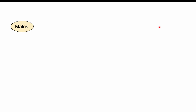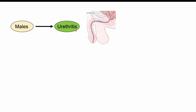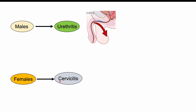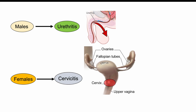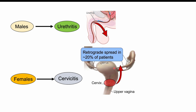In males, infection leads to urethritis — an inflammation of the urethra — and in some cases the organisms can invade into the epididymis and testis. In females, the organisms can enter the cervix and cause cervicitis, specifically endocervicitis on the inner side of the cervix. In some cases they can spread further up into the female reproductive system — this retrograde spread occurs in approximately 20% of patients.